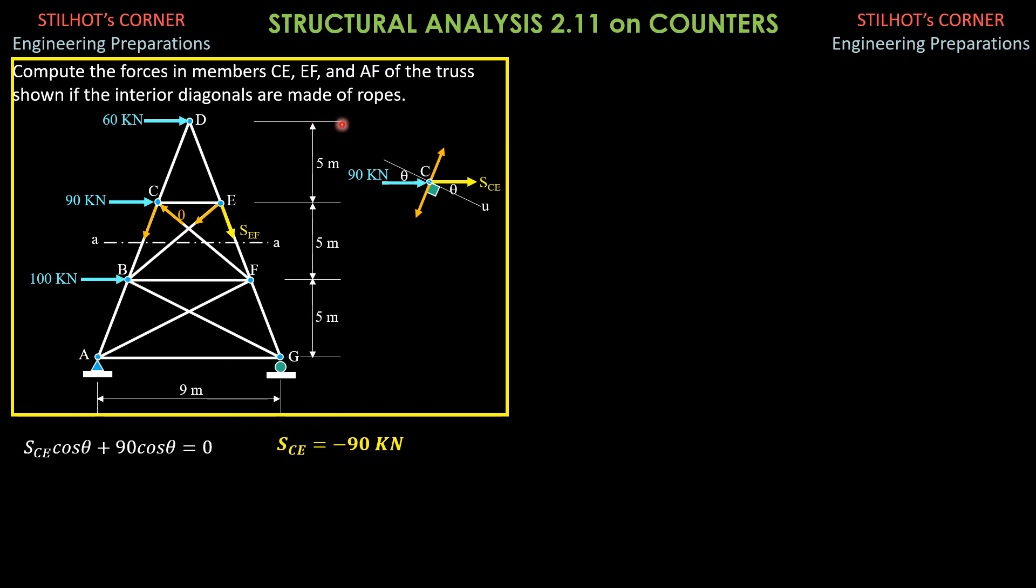By principle of transmissibility of force, I move SEF here, and take note that this is 9 meters and these horizontal members are equally spaced apart. Therefore, 9 should be divided by 3, so this is 3 meters, next is 6 meters. We move EF here at F. There are two components, horizontal, which passes through B, so that's not important. The only important component is the vertical component, which is SEF.